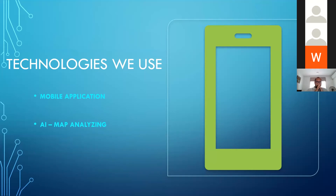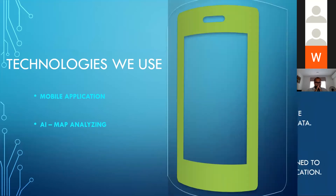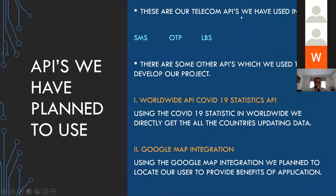The technologies we are using: first, we implement a mobile application. Next, using map analysis, we hope to show the vaccination places and where vaccinations are happening. For APIs, the main ones we plan to use are Telecom APIs — SMS, OTP, and LBS — with OTP as our main API.